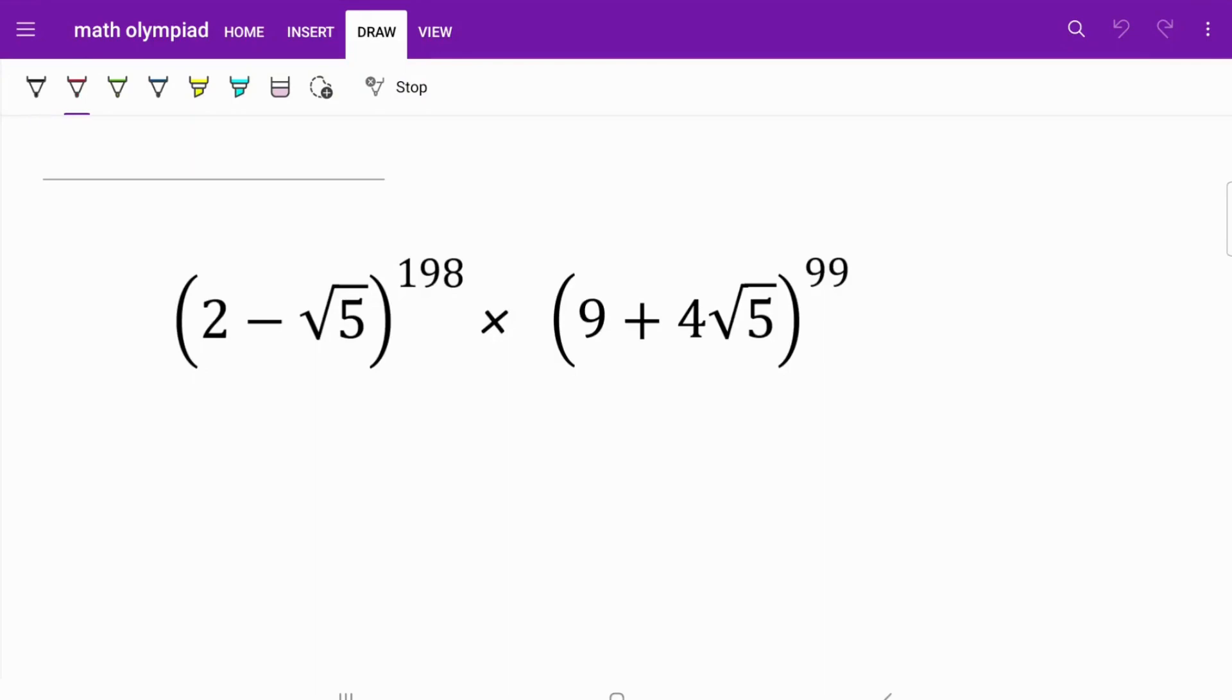Let's first try to explore what we are given. The first thing that we notice is 198 and 99. These two numbers are related. We know 99 multiplied by 2 is equal to 198. So that's a relationship that we can use in our calculation.